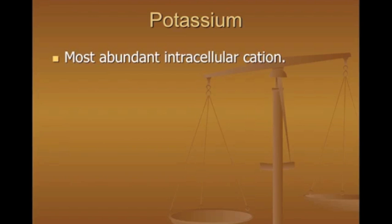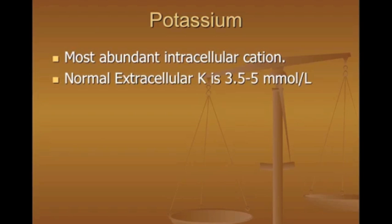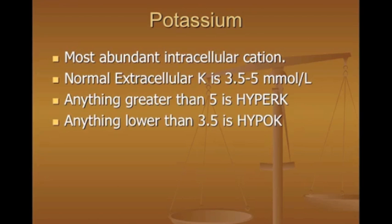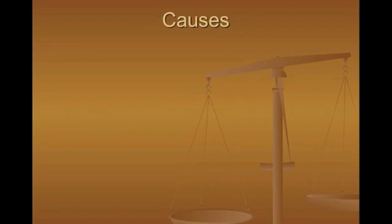Potassium is our most abundant intracellular cation — remember 'potent sodex': potassium, intracellular. The normal extracellular potassium is about 3.5 to 5 millimoles per liter. Anything greater than five is hyper-K, so if your patient is showing signs or EKG changes and their potassium is greater than 5.5, you should probably treat. Anything lower than 3.5 is hypo-K — we'll leave that for another lecture.